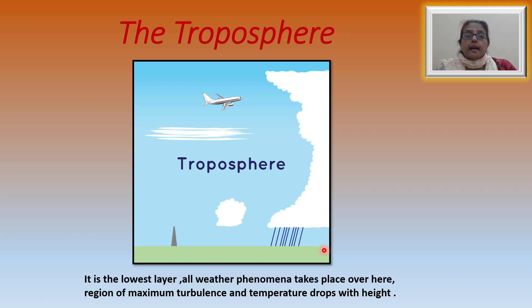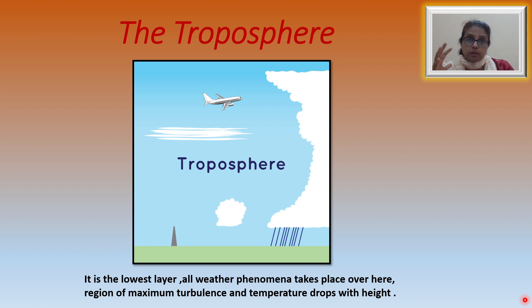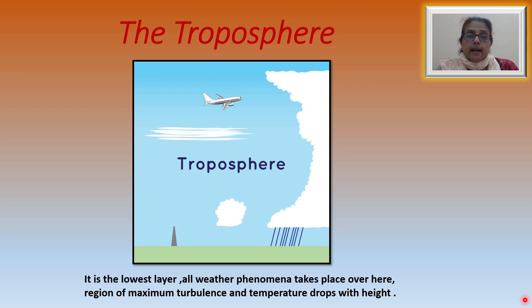The troposphere is the densest layer. There is a lapse rate — as one goes higher in the troposphere, there is a drop of one degree centigrade for every 165 meters of ascent. Another very important feature is that 90% of the atmosphere's total mass is found in this layer. Maximum turbulence takes place here, and the lapse rate — a decrease in temperature with altitude — occurs in this layer.